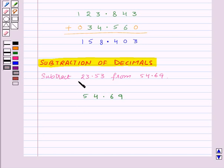Now, let us write the number which we want to subtract from 54.69. Here, 3 is at hundredths place, so we will write 3 below 9. Then, 5 below 6 at tenths place. Decimal will come just below decimal. Then, 3 below 4, that is at ones place. Now, 2 below 5, that is at tens place.